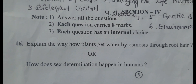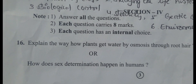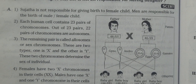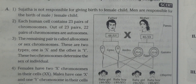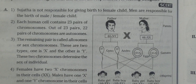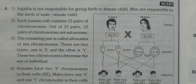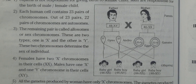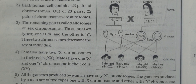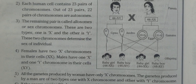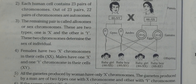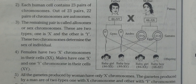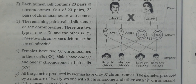Seventeenth question: how does sex determination happen in human beings? This involves a flowchart. The father has 44 plus XY chromosomes, and the mother has 44 plus XX chromosomes, determining the sex of the offspring.